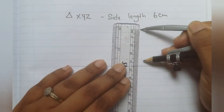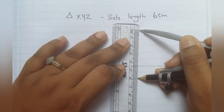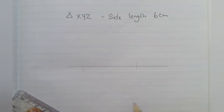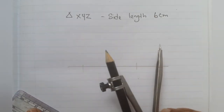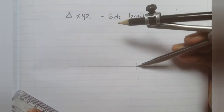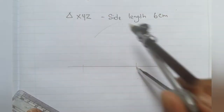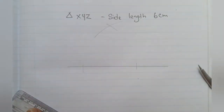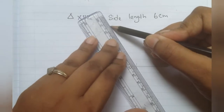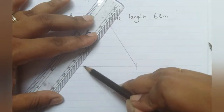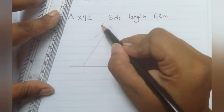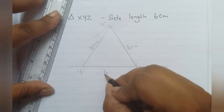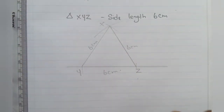Draw the 6 centimeter line segment. Without changing the compass width, place arcs from each endpoint of the segment to find the third vertex. Join the two new points to each end of the base. This gives triangle XYZ with each side measuring 6 centimeters. Drawing an equilateral triangle is quite straightforward.